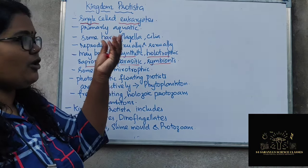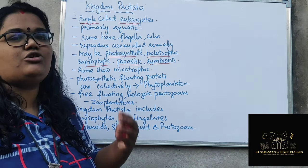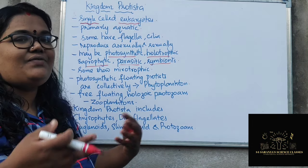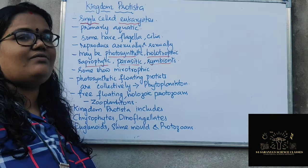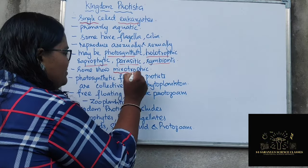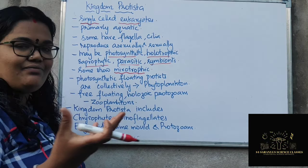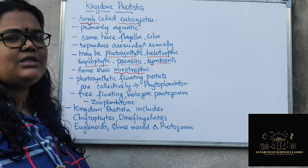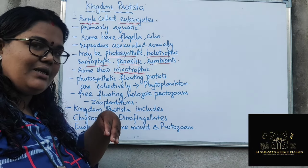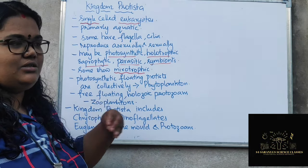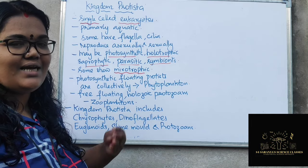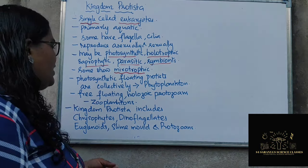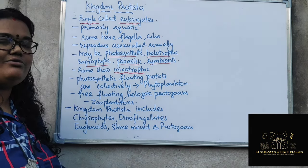Some organisms in Kingdom Protista follow mixotrophic nutrition, meaning they follow more than one mode of nutrition together. Euglena is one classic example of this, and we will learn about it in detail later.